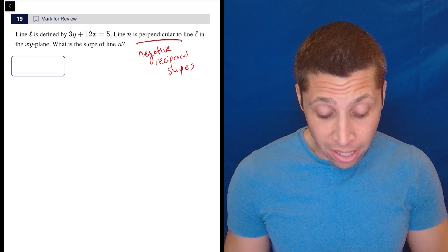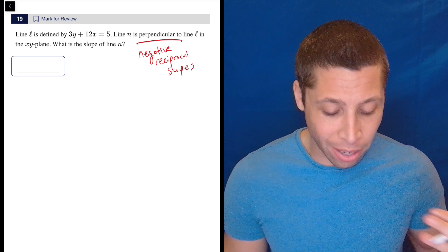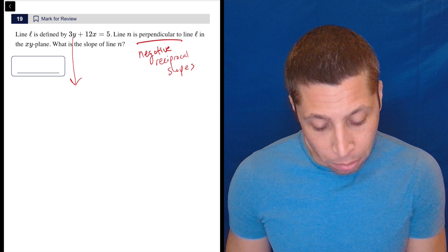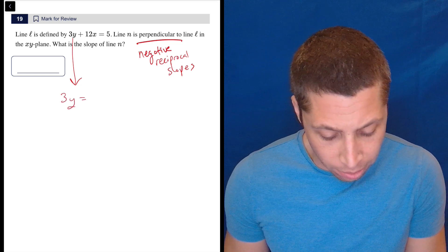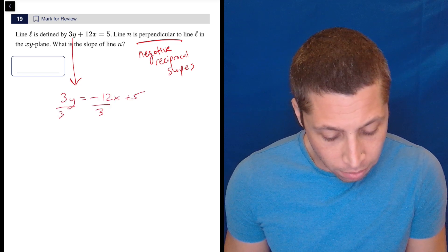But the line that they're giving me, 3y plus 12x equals 5, does not have a slope that I can tell. It's not written in y equals mx plus b format. So that would be the first thing I would do. I would subtract the 12x. So 3y is equal to negative 12x plus 5, divide by 3, divide by 3.